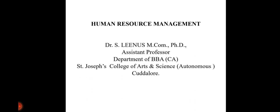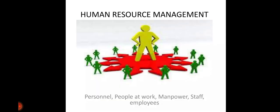In this video, we are going to discuss about a piece of information from Human Resource Management. Before going to that, we need to know what is meant by Human Resource Management and what are all the things that are involved in it. In Human Resource Management, these factors are involved: Personnel, People at Work, Manpower, Staff, and Employees. These are the bigger terms used in Human Resource Management, and we will discuss them one by one in the upcoming slides.